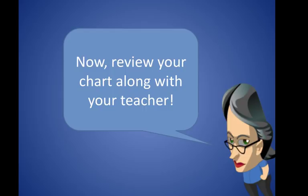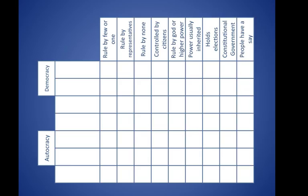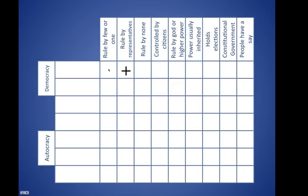Now we're going to do a little review. You'll notice in your packet a chart that looks like this. I want you to at least get this side of the chart filled out. If you can, go through and follow the instructions at the top to put marks in the appropriate boxes. For example, if democracy has rule by few or one, put a plus sign there. I'll look it over in class tomorrow.